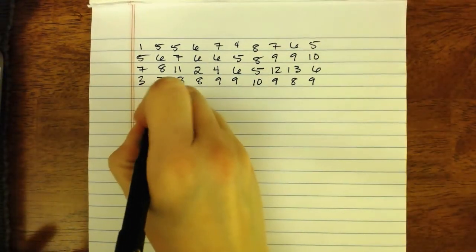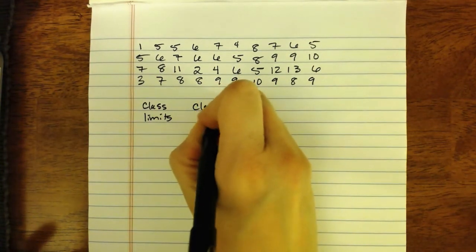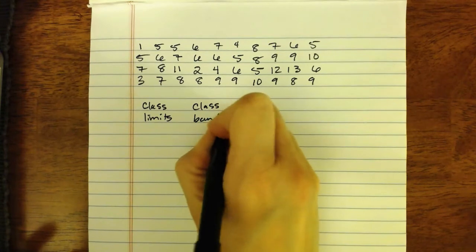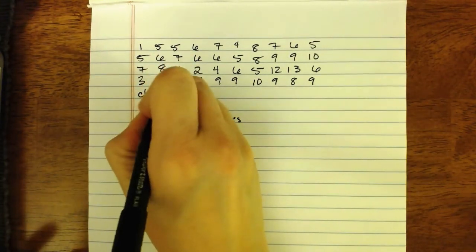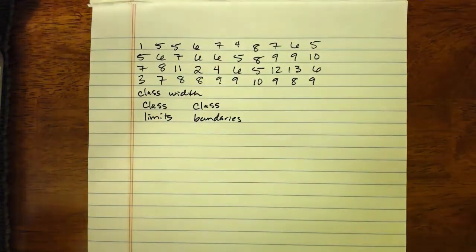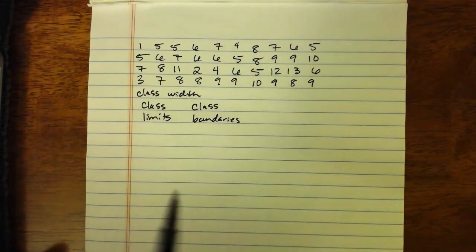So we would need class limits, class boundaries, and we would also need to know the class width. That's actually all you need to know to be able to make a histogram in your calculator: class width, limits, and boundaries.